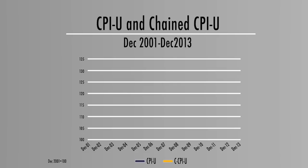Over time, the Chained CPI tends to increase at a slightly lower rate than other measures of consumer inflation. For example, over the 12-year period from December 01 to December 13, the Chained CPI rose at an average annual rate of 2.11%, compared to 2.33% for the CPI U.